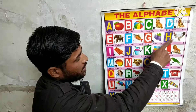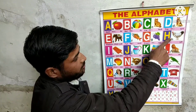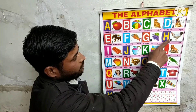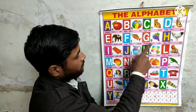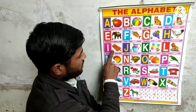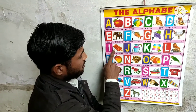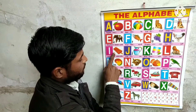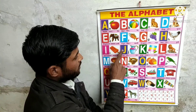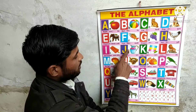H for hen, hen means murgi. I for ice cream, ice cream means ice cream.